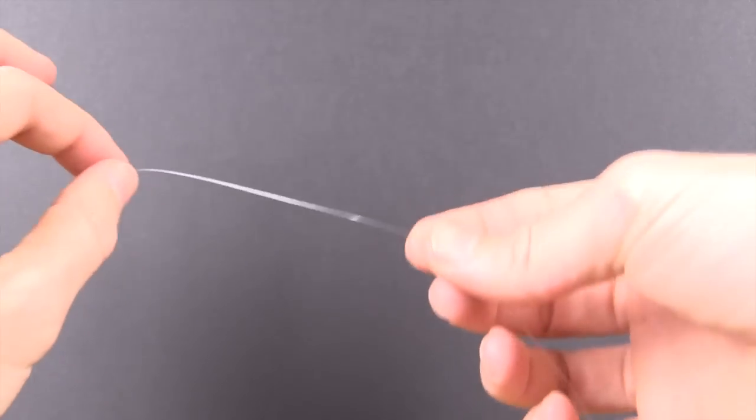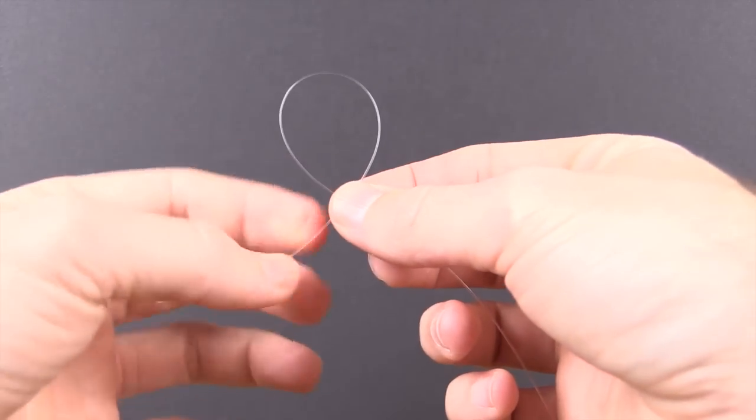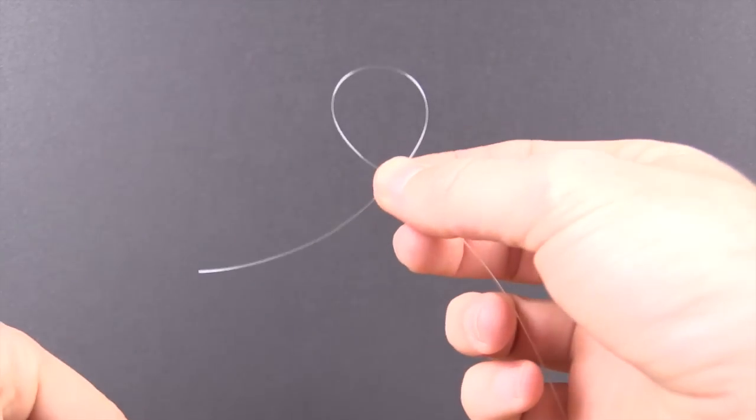First, before you even put the hook on, you just do a little loop. And I always have it where the back end, so the little extra line is on the back side. So I just pinch it in there with my right hand.